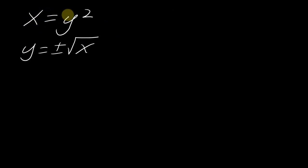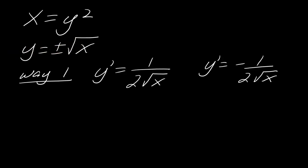This is the function that I started with, x equals y squared. And if I solve for y, I get y equals plus or minus the square root of x. Now, using this form of the function, the first way I did this was I just took the derivative twice for each different way that we could write this function. So this was the derivative for the positive one. This was the derivative for the negative one.